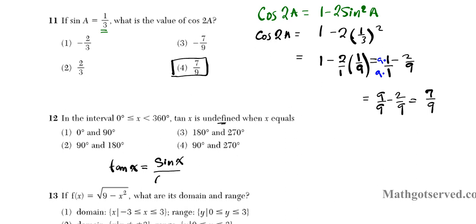What causes a function to be undefined is whenever the denominator is 0. So any time the denominator function cosine x is 0, tan will be undefined. We're going to focus our attention on the function in the denominator of tan x expressed as a rational function, and see where cosine x equals 0 — those will be the values where tan is undefined.